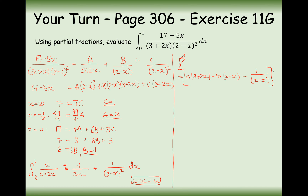All of this is now bounded between 1 and 0. Substituting in x equals 1 first: ln 5 minus ln 1, which is 0, so that's nice and easy — then minus 1 over (2 minus 1), which is minus 1. Then subtracting the x equals 0 substitution: that gives ln 3 minus ln 2.